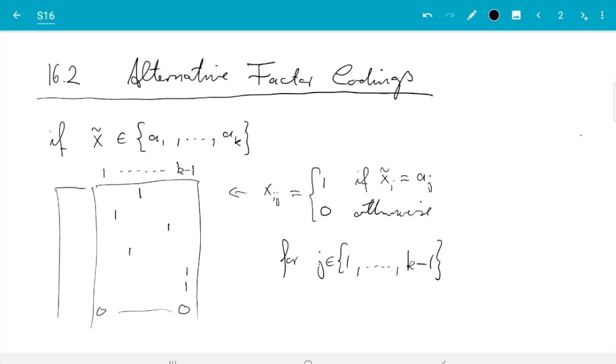The reason is that normally there is also an intercept that is 1 everywhere. And if we would have this extra column k here, which would be 1 here, then if we would add these columns corresponding to the factor, then we would get 1 in every row. So the sum would always be 1. And that would equal the intercept. So we would have exact multicollinearity.